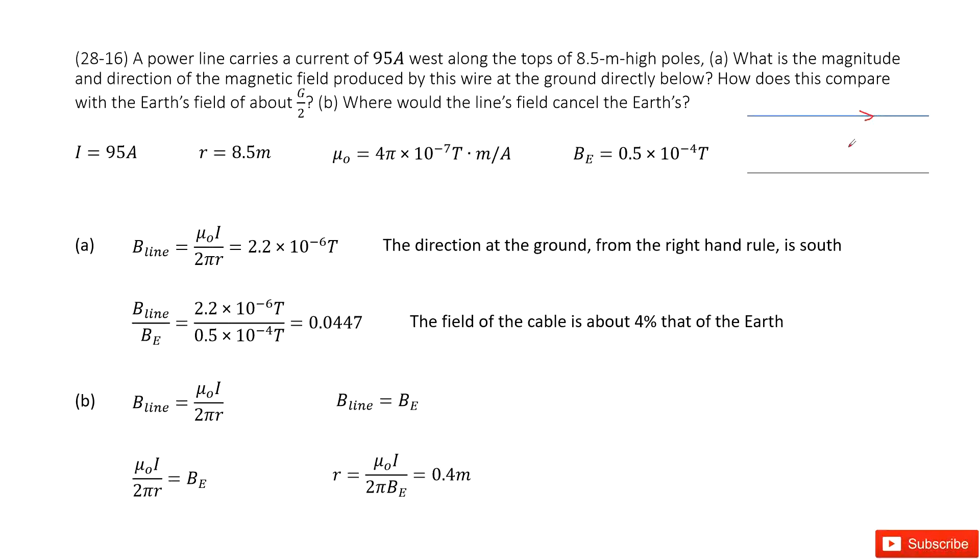And then how can you determine its magnetic field? So the magnetic field, you can see, use the right-hand rule. It is just this way, pointing up. So this way. From the right-hand rule, the direction at the ground is south.